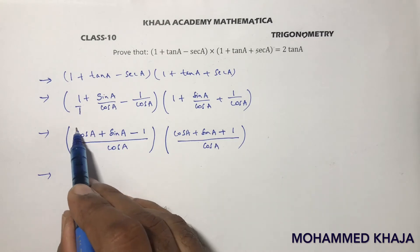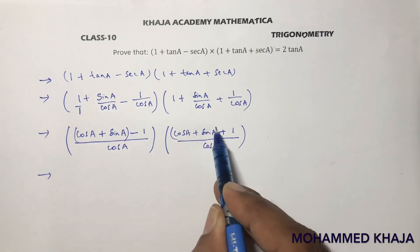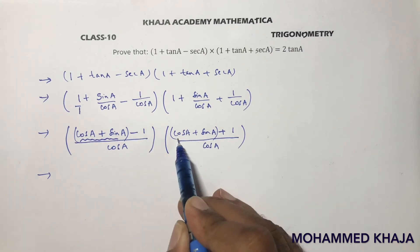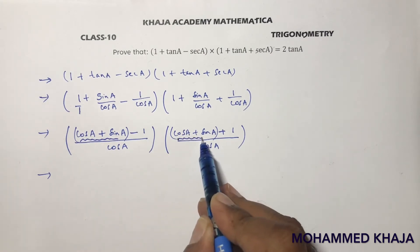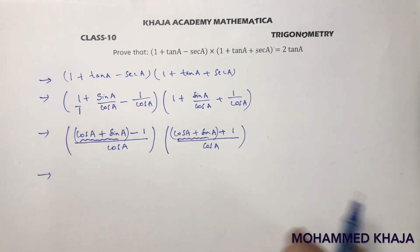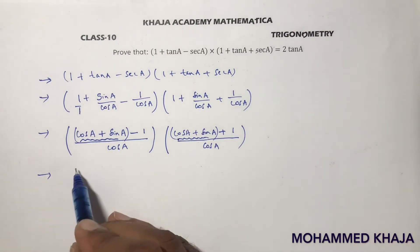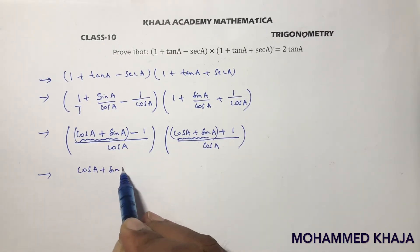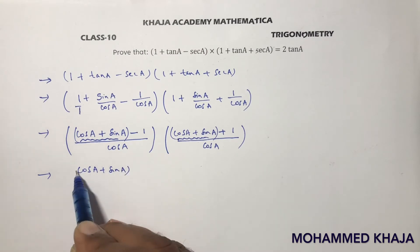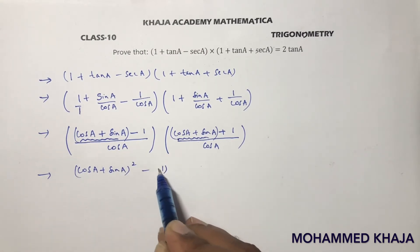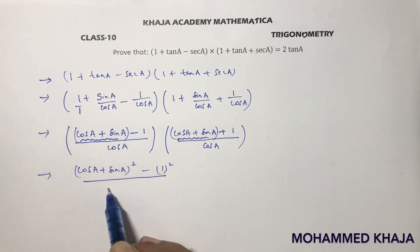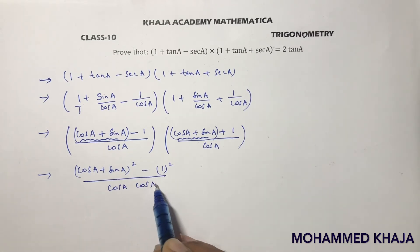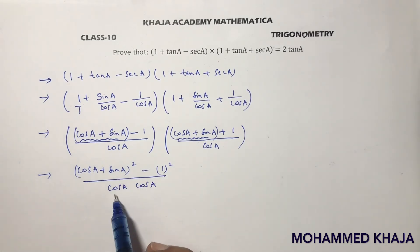Observing these terms, we have (cos a + sin a - 1)(cos a + sin a + 1), which is of the form (a - b)(a + b) = a² - b². So this gives us (cos a + sin a)² - 1², all divided by cos a × cos a.